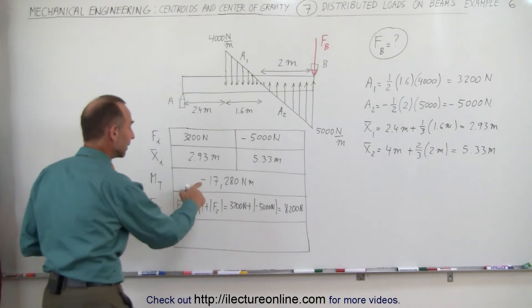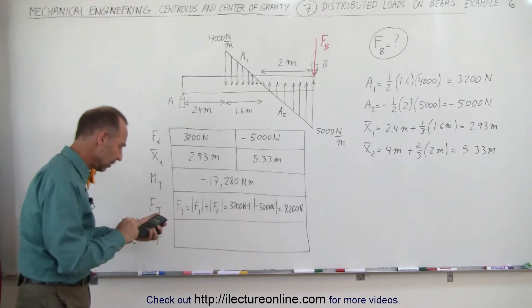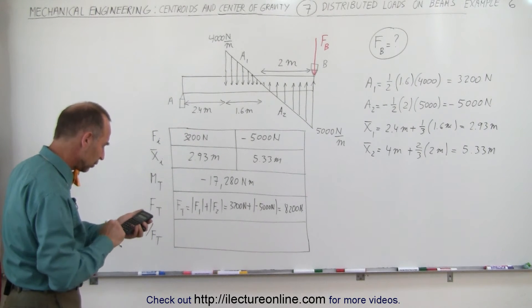Now if we divide this by this, and again to find the x-coordinate we have to take positive values here. We take the 17,280 newton-meters and divide by 8,200 newtons, and we get a distance of 2.107 meters.